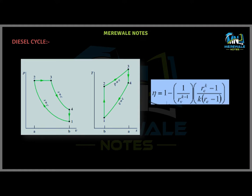Before starting with the cut-off ratio, we should talk about the diesel cycle. As we know, we have PV and TS diagrams for each cycle. In the diesel cycle, there are four processes. Process 1-2 is the isentropic compression, in which work is done on the system. Process 2-3 is the constant pressure heat addition process, meaning the isobaric process.